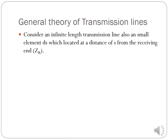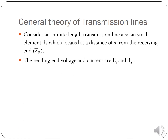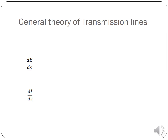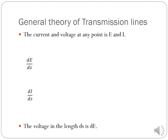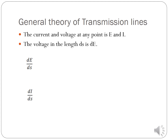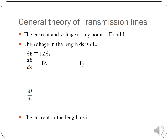For this general theory of transmission line, consider an infinite-length transmission line with a small length DS located at a distance S from the receiving end. The sending-end voltage and current are ES and IS; the receiving-end voltage and current are ER and IR. The current and voltage at any point E and I satisfy: dE/dS = I·Z and dI/dS = E·Y.